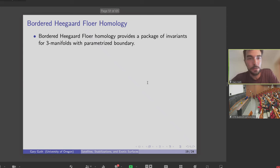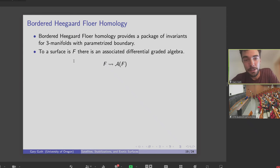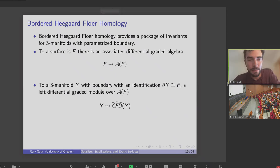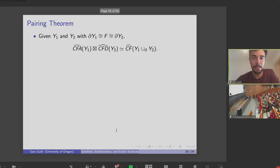And it turns out the right tool to do this is bordered Heegaard Floer homology. So let me briefly tell you what this is. So bordered Heegaard Floer is a package of invariants for three manifolds with parametrized boundary. So to a surface, there's an associated differential graded algebra, which we call A of F. And then if I have a three manifold with boundary, there are two invariants. One is a left differential graded module, which we call CFD hat. And the other is a right A infinity module called CFA hat.